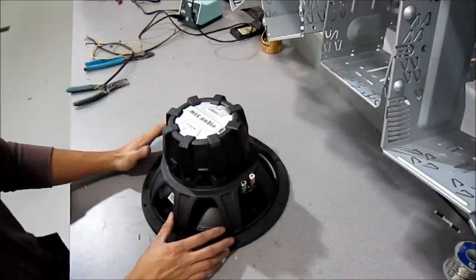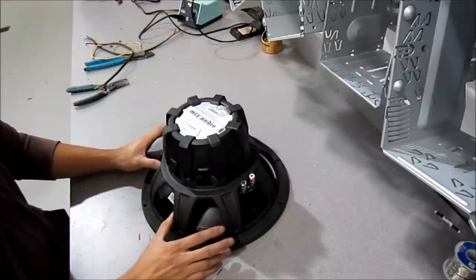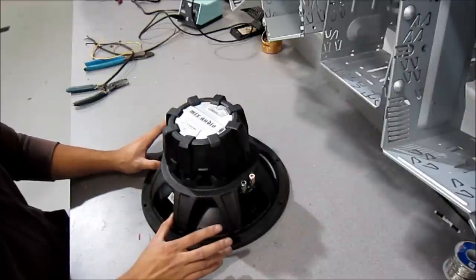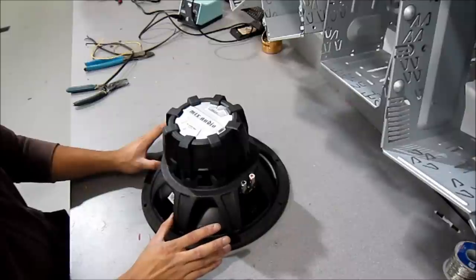Also keep in mind, you can also buy amplifiers that are 1 ohm stable. So it's better to buy a subwoofer that's a dual voice coil that is rated at 2 ohms each if you want to get down to 1 ohm.